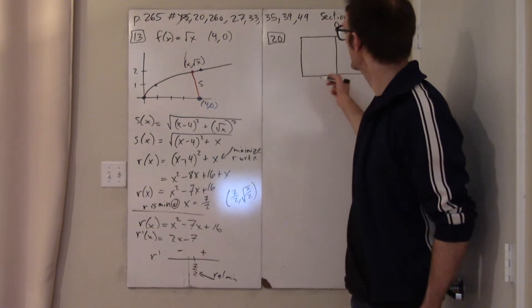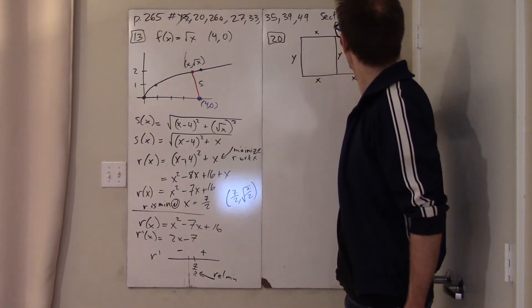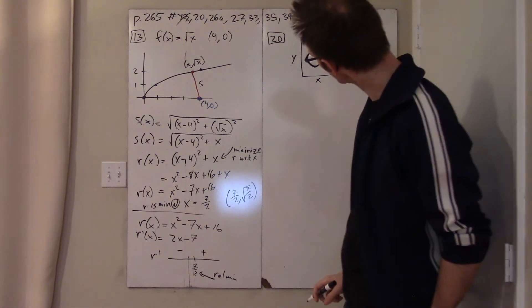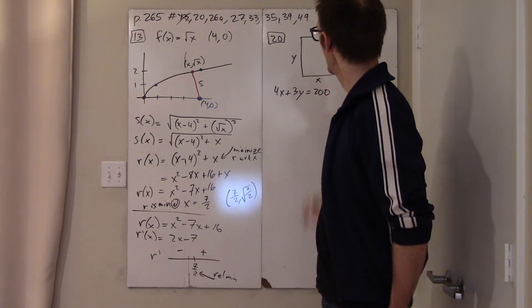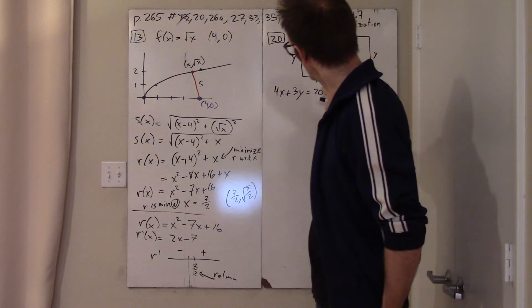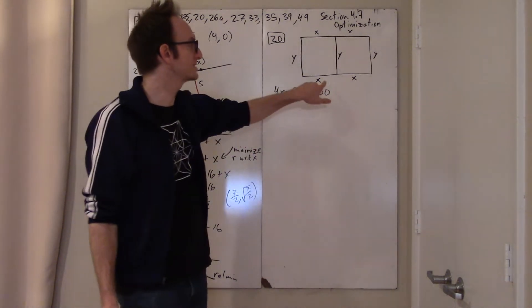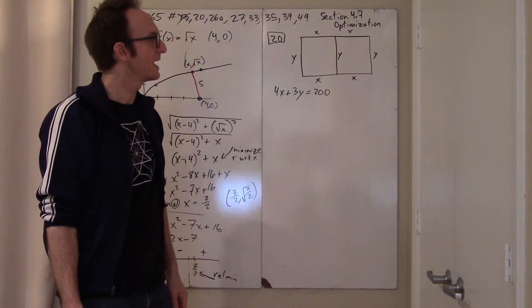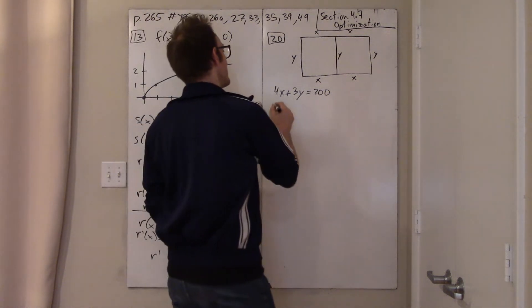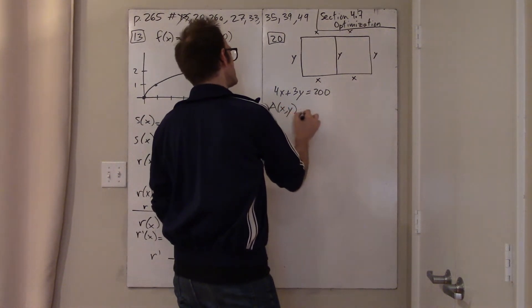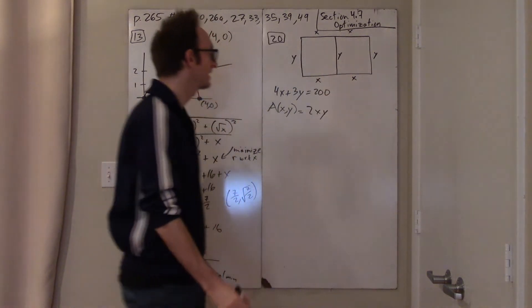This problem requires initiative — we need to choose variables. I'll call the repeated dimension x and the other dimension y. With that choice I can write an expression for the perimeter: 4x + 3y = 200. That's a good choice because it tells us x and y depend on each other — if you give me x, I know y. Now I need to remember what I'm optimizing: the area, which is 2xy.